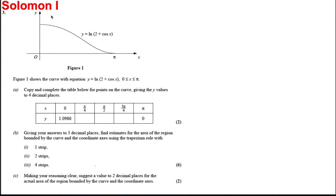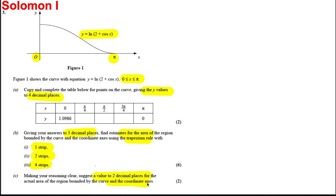Here's a trapezium rule question. We have a function which is ln(2 + cos x), between 0 and π. Figure 1 shows the curve between 0 and π. Complete the table for the points on the curve giving the y values to 4 decimal places. Then give your answers to 3 decimal places. Estimate the area of the region using the trapezium rule with 1 strip, 2 strips, and 4 strips. And at the end, making your reasoning clear, suggest a value to 2dp for the actual area bounded by the curve and the coordinate axes.